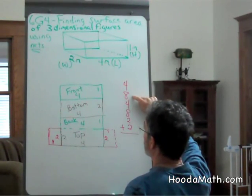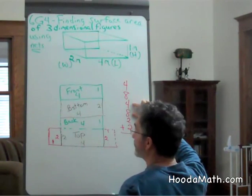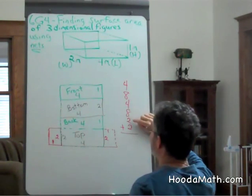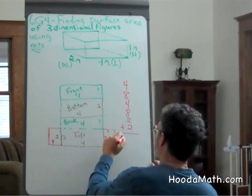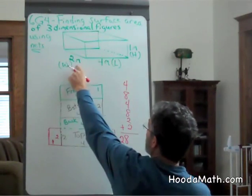Four plus eight is twelve. Four plus eight is another twelve. Twelve and twelve is twenty-four. Plus two is twenty-six. Plus two is twenty-eight. And it's going to be square meters.